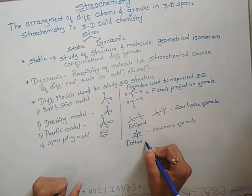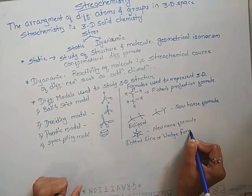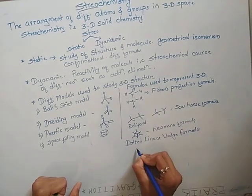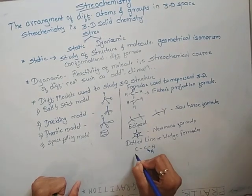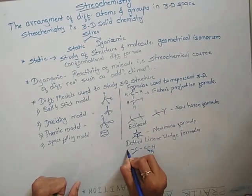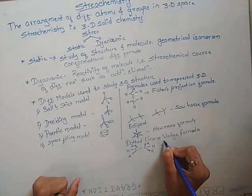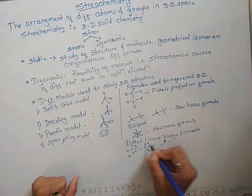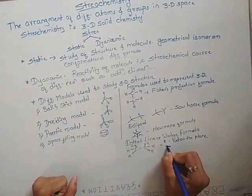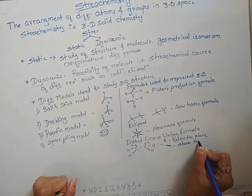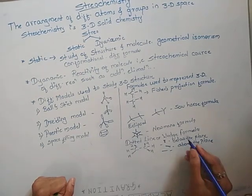The last formula is the dotted line or wedge formula. In this structure of ethane, a diagonal dashed line represents a hydrogen that is below the plane, a solid wedge line represents a hydrogen that is above the plane, and a straight line represents a hydrogen that is in the plane.